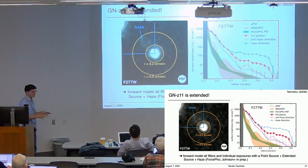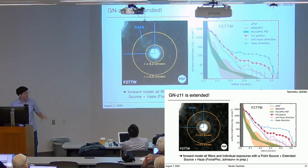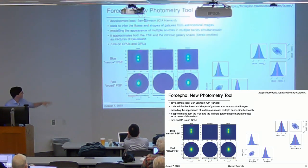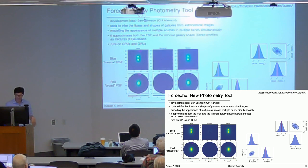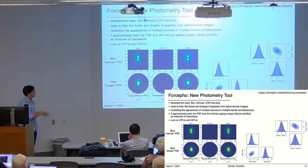We have spent a lot of time understanding the point spread function so we can carefully characterize the structure of this galaxy. There is a haze-like structure to the top left, and the galaxy itself appears compact but is actually extended beyond the PSF. To learn more about the structure, we need to do forward modeling of the light. Brent Johnson developed a tool called ForcePho, which forward models all individual exposures in all filters simultaneously to maximize signal-to-noise and avoid correlated noise from mosaics.